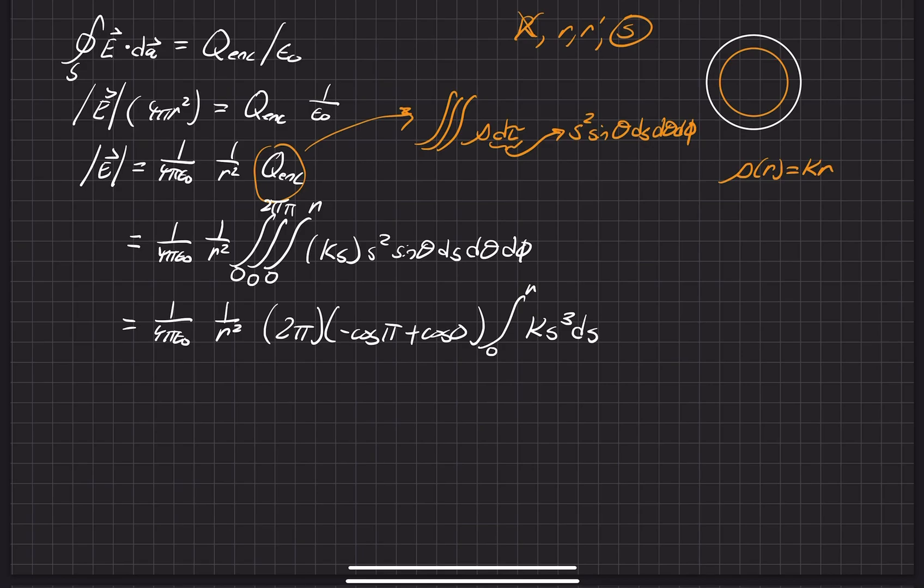All right, so let's go ahead and simplify. A negative cosine pi is just a positive 1. Plus a cosine of 0 is just 1. And let's just go ahead and look at this integral over here. Place it over here. That's equal to K, R to the 4th over 4.